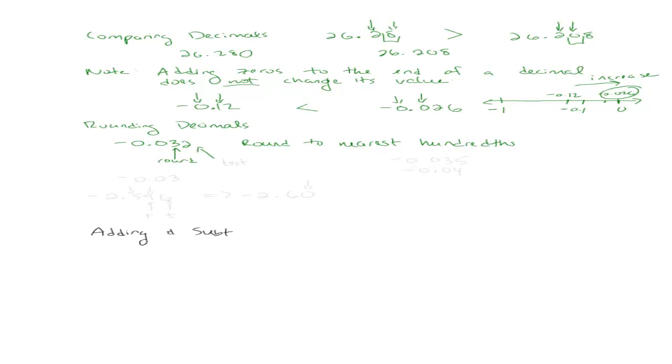The place next to it is a two. We are going to call that the test digit. So the same way that we round whole numbers, we are going to look at the round digit and the test digit. The test digit is less than five, so we are going to round down. So when I round this, it is negative 0.03. And that is it.